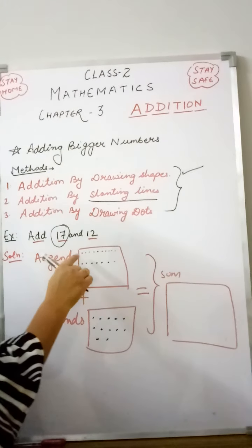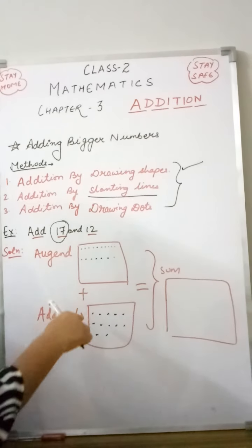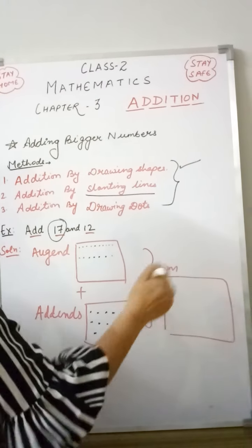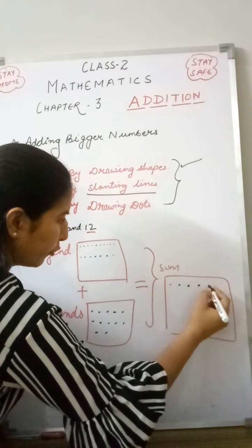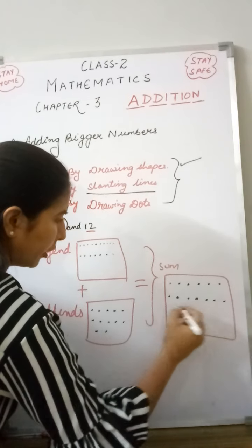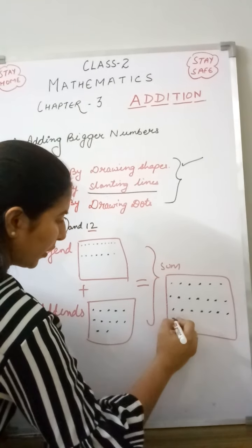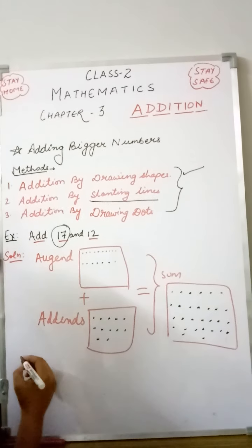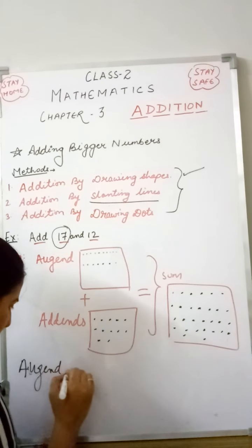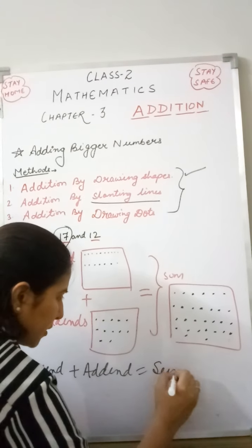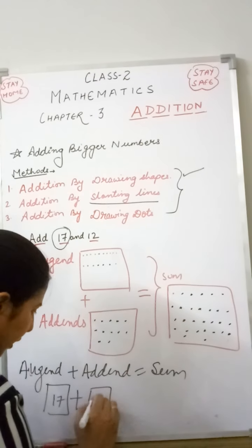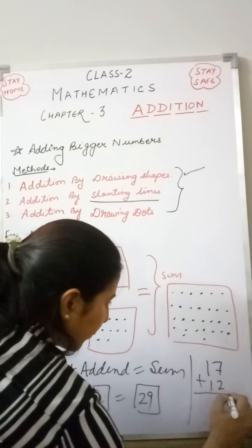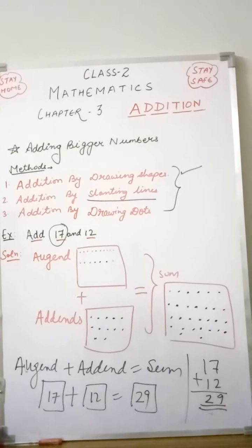Let's count the total number of dots. The first box has 17. Starting from 17, we count on: 18, 19, 20, 21, 22, 23, 24, 25, 26, 27, 28, 29. So the sum box will have 29 dots. We can also verify with formal addition: 17 plus 12 — 7 plus 2 is 9, and 1 plus 1 is 2, giving us 29. The sum is 29.